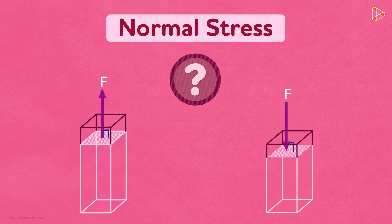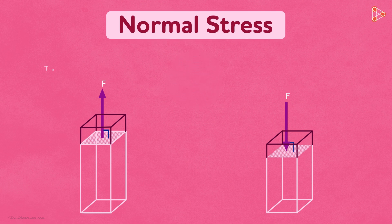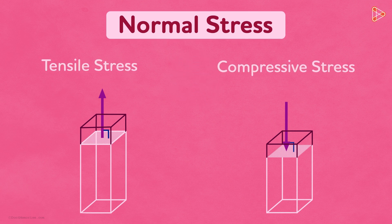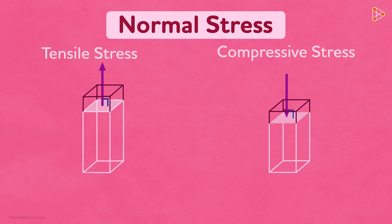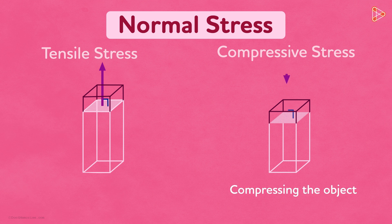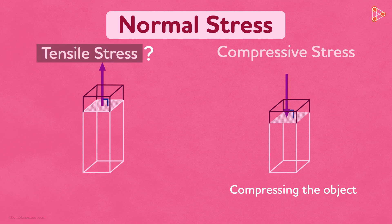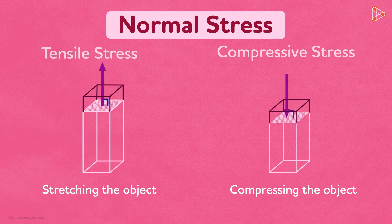Normal stress can further be divided into two subcategories: tensile stress and compressive stress. When the normal force is compressing the object, the stress experienced by the object is called normal compressive stress, or simply compressive stress. Tensile stress, on the other hand, is a type of normal stress where the force is stretching the object. Note that in this case, the length of the beam will increase. We've stressed enough about the types of stress for now, so let's talk a bit about strain.